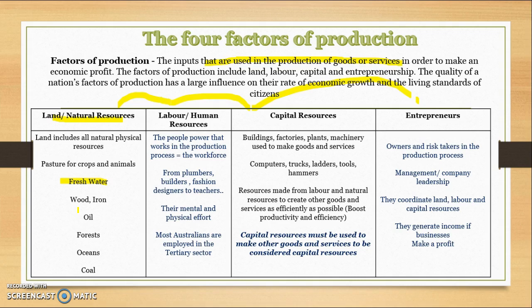Labour, or human resources, are the people power that work in the production process — all the people that go about making goods and services. That can be plumbers, builders, fashion designers, teachers, and basically they combine their mental and physical effort in order to make goods and services.